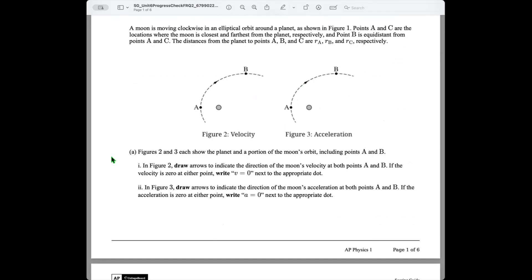So Part A, Figures 2 and 3 each show the planet and a portion of the moon's orbit, including points A and B. A1, in Figure 2, draw arrows to indicate the direction of the moon's velocity at points A and B. If the velocity is zero at either point, write V equals zero next to the appropriate dot. And then A2 in Figure 3, draw arrows to indicate the direction of the moon's acceleration at both points A and B. If the acceleration is zero at either point, write A equals zero next to the appropriate dot. No problem. Let's go for it.